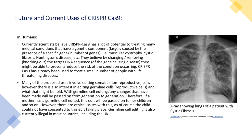Some examples of these include muscular dystrophy, cystic fibrosis, and Huntington's disease. Scientists believe that by changing or removing — knocking out — the target DNA sequence which causes these conditions, they can prevent or reduce the risk of the disease occurring.